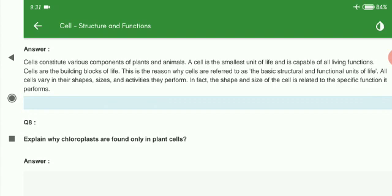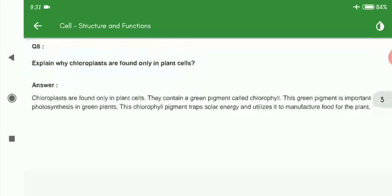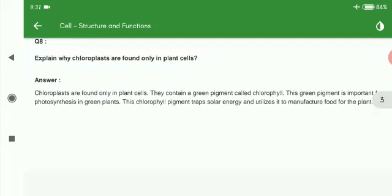Students, the next question is: Explain why chloroplasts are found only in plant cells. The reason is that in plant cells, the presence of plastids is seen. The green color pigment plastids are seen only in plant cells, so chloroplasts are found only in plant cells.